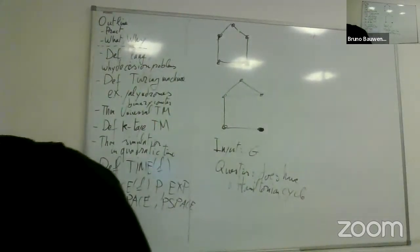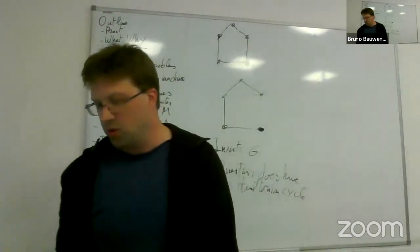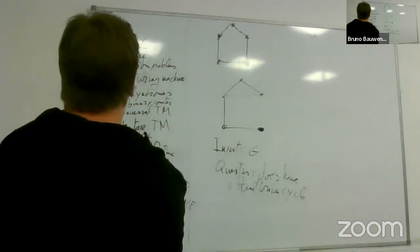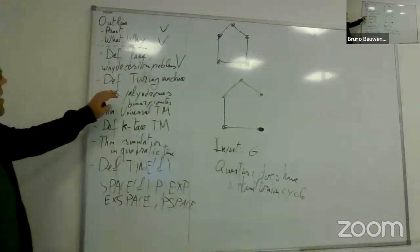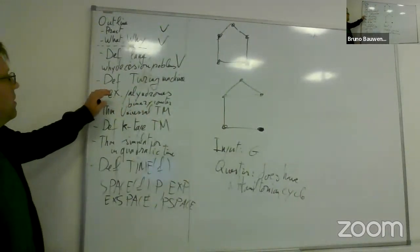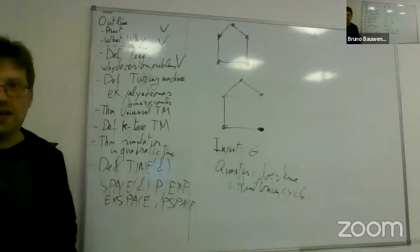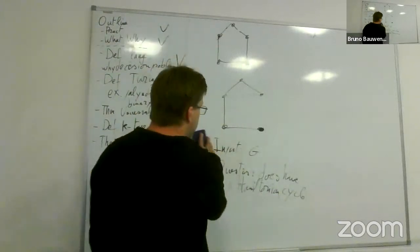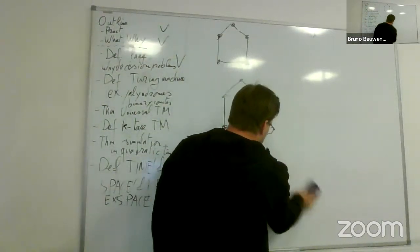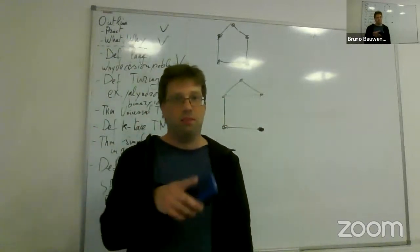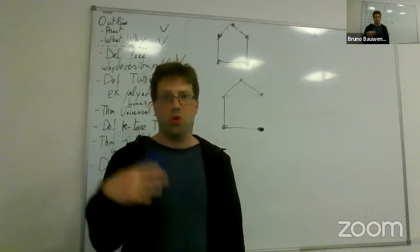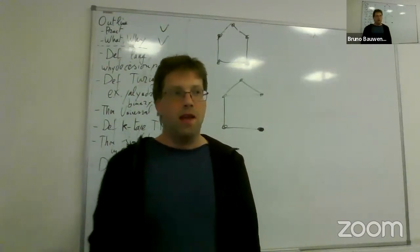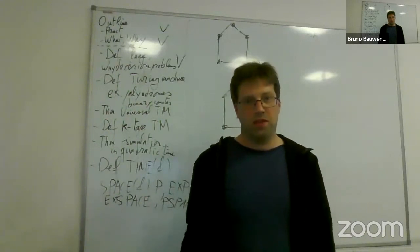Now we know the basic definitions. Let's start with Turing machines. In algorithm courses people count elementary operations using the RAM model. We will use a different model — we will measure time by running algorithms on Turing machines and counting elementary steps.